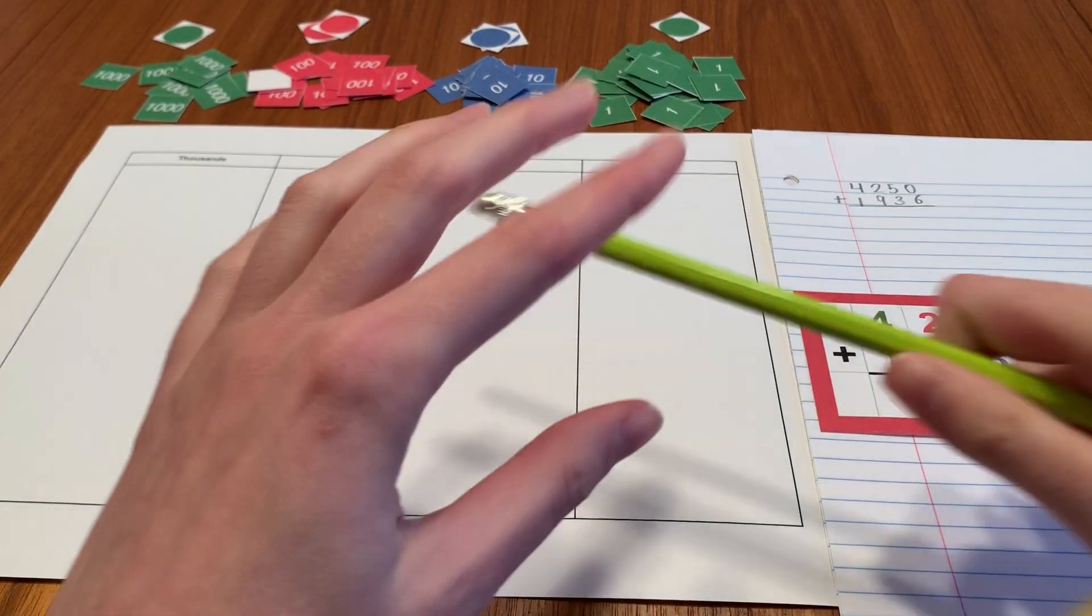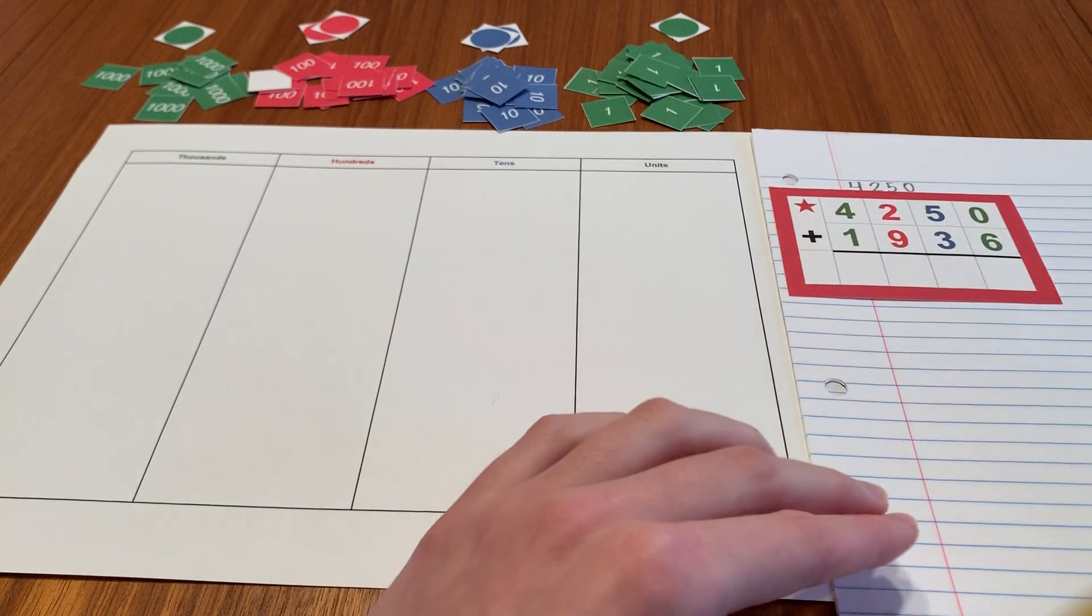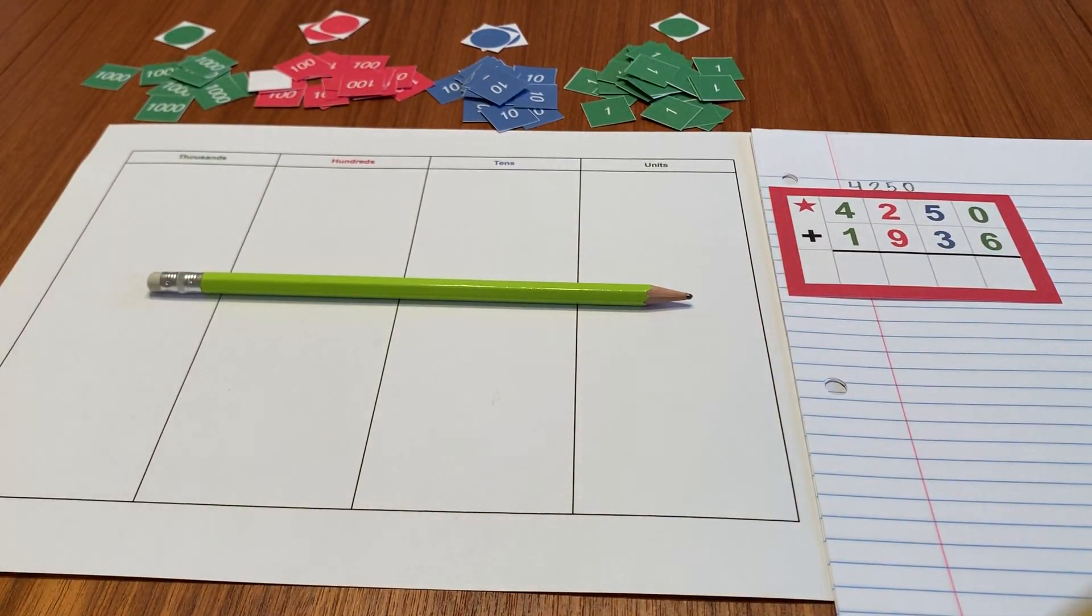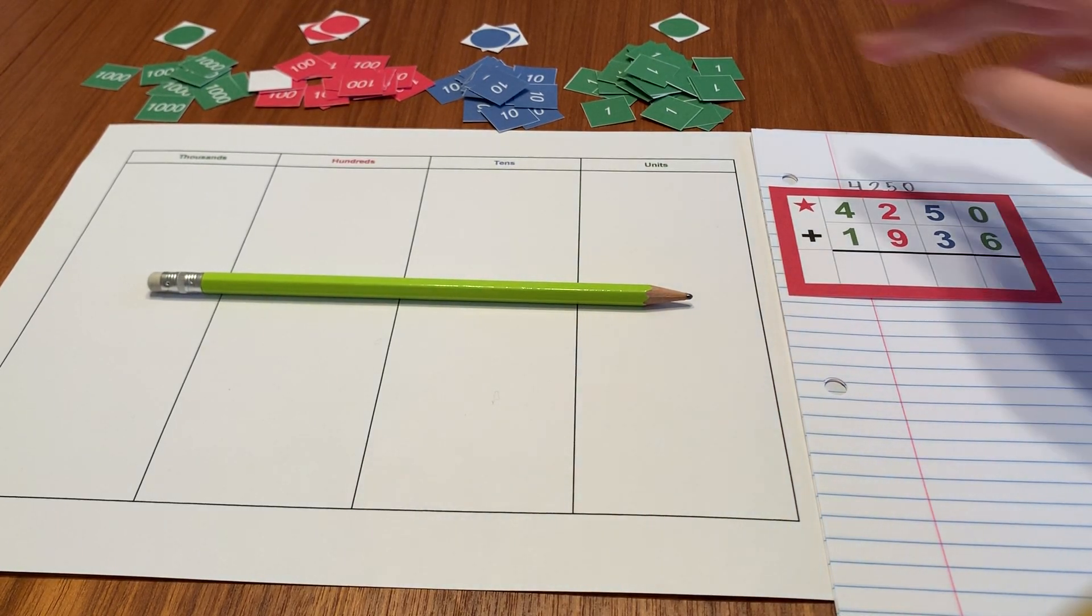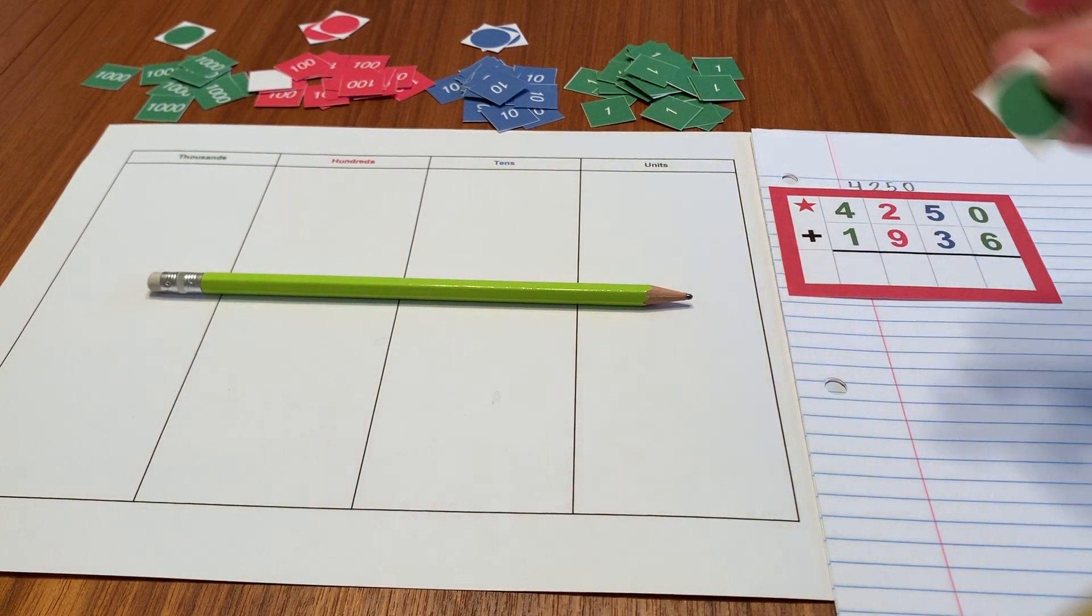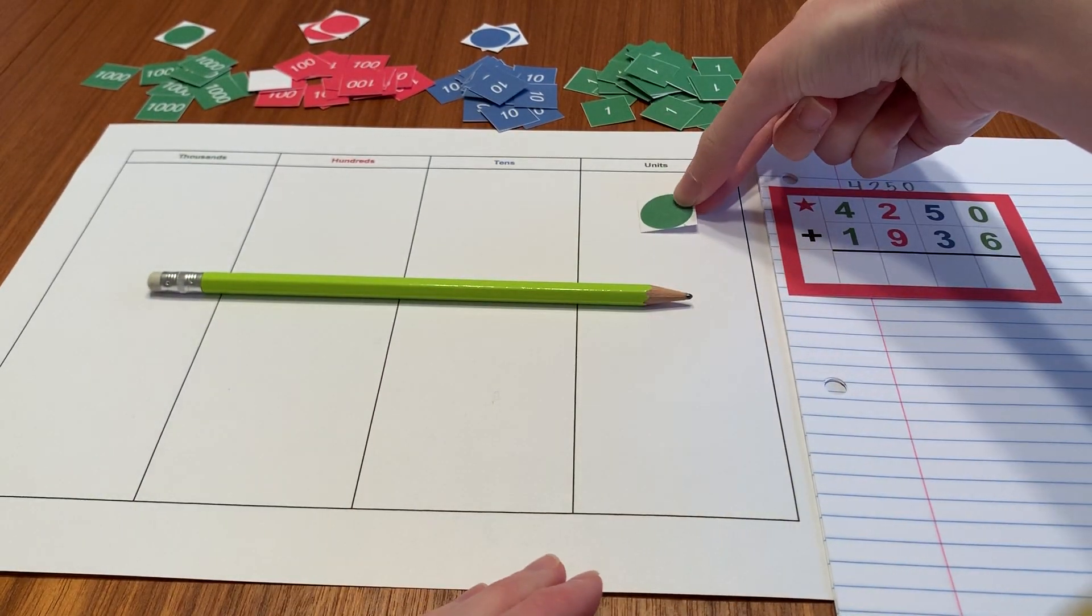So I'm going to start by making the first number, four thousand two hundred fifty. So I always like to start in my units place. And because there is a zero there, I'm going to use this circle as a placeholder.